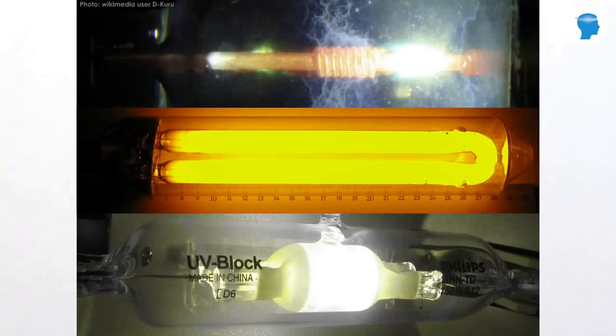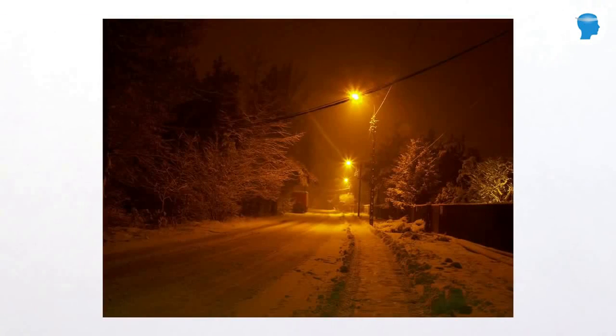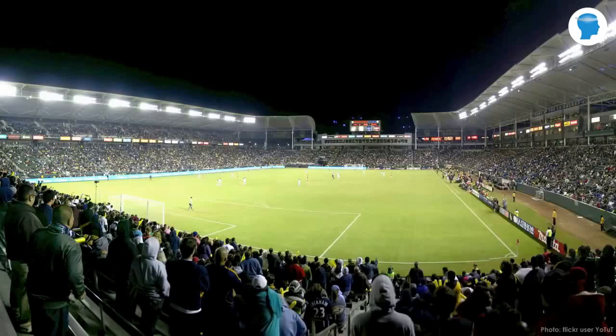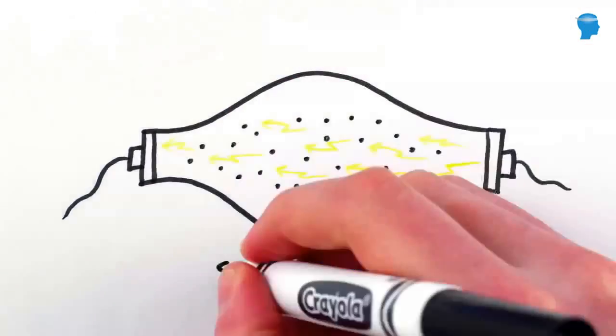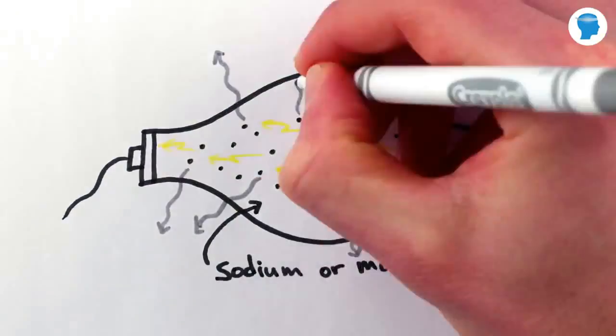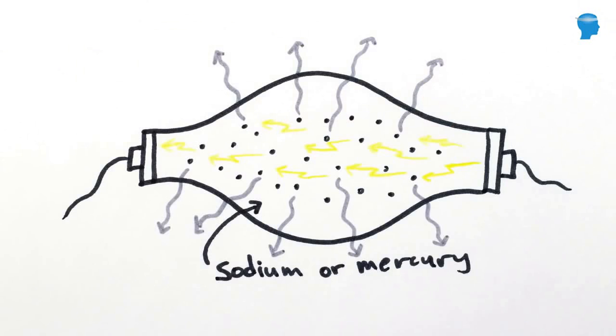Sodium, mercury, and metal halide vapor lamps, which are commonly used for lighting streets, warehouses, gymnasiums, and other large areas, are also tubes that run electrical current through a gas. The gas itself emits mainly visible light, so these bulbs don't need a fluorescent coating.